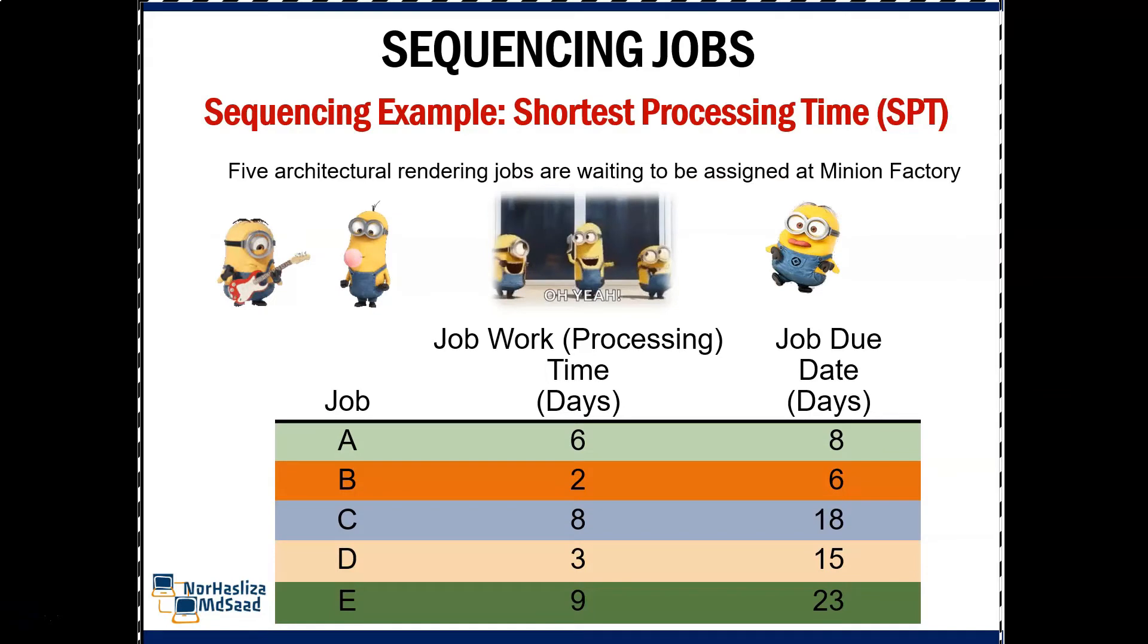In this example, I will show you how to use sequencing jobs using shortest processing time. Five architectural rendering jobs are waiting to be assigned at Minyan Factory. Their work processing times and due dates are given in the following table.